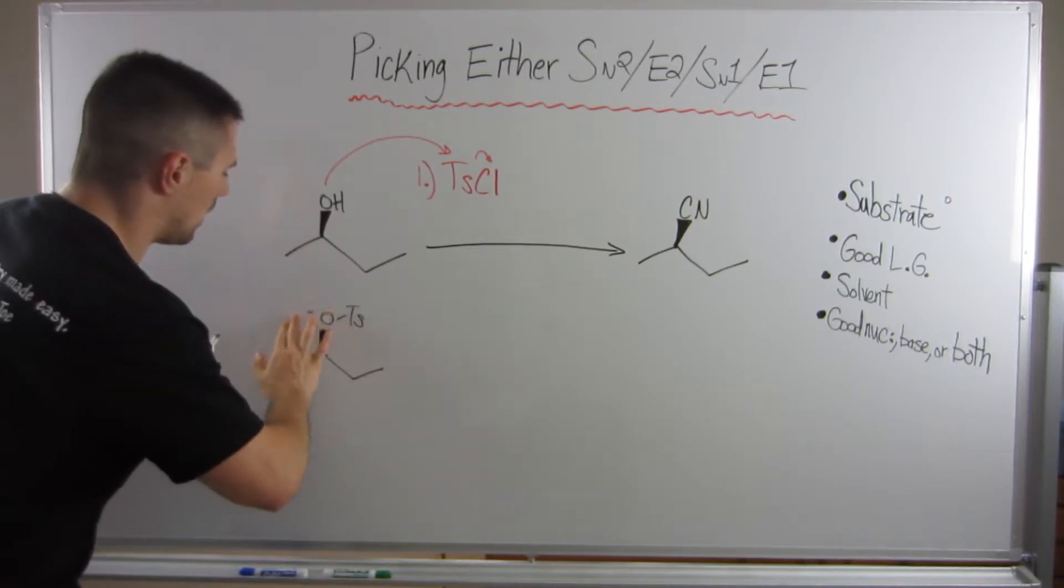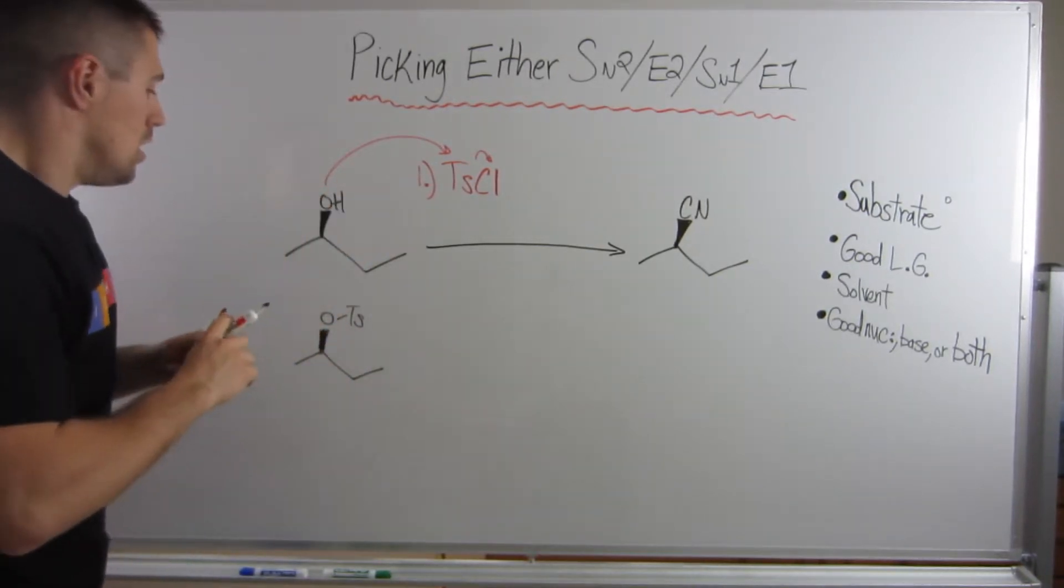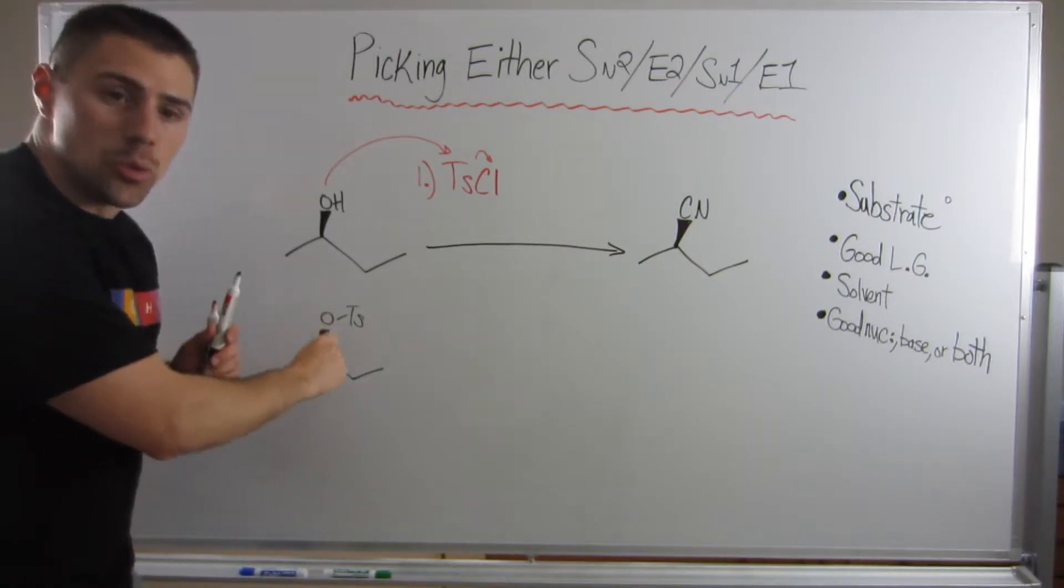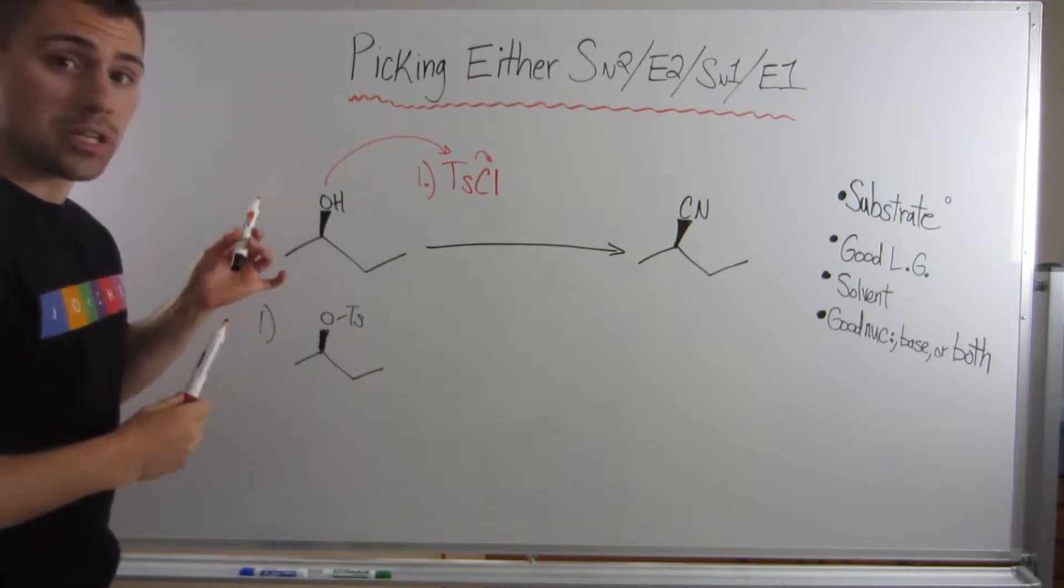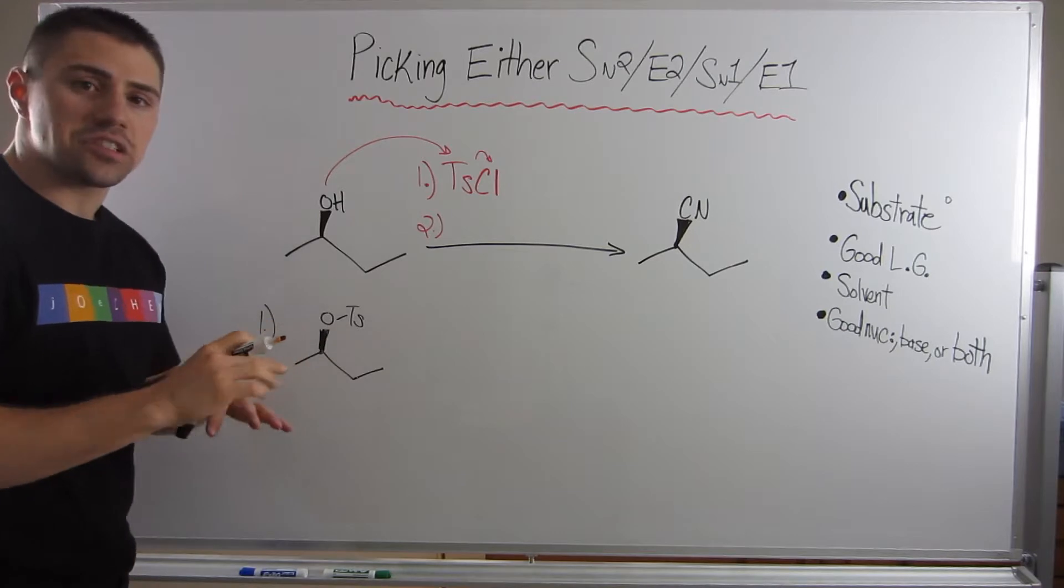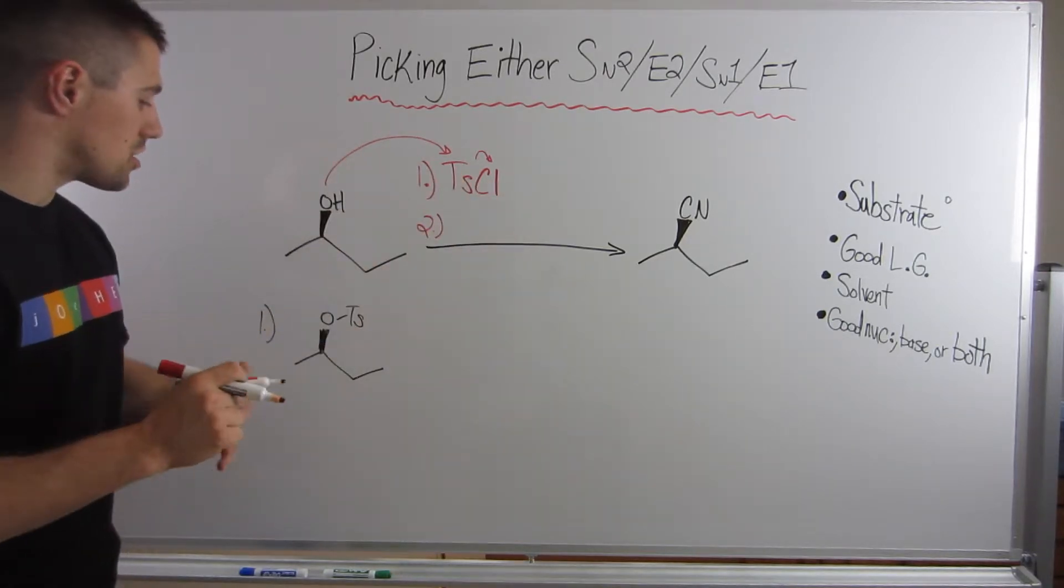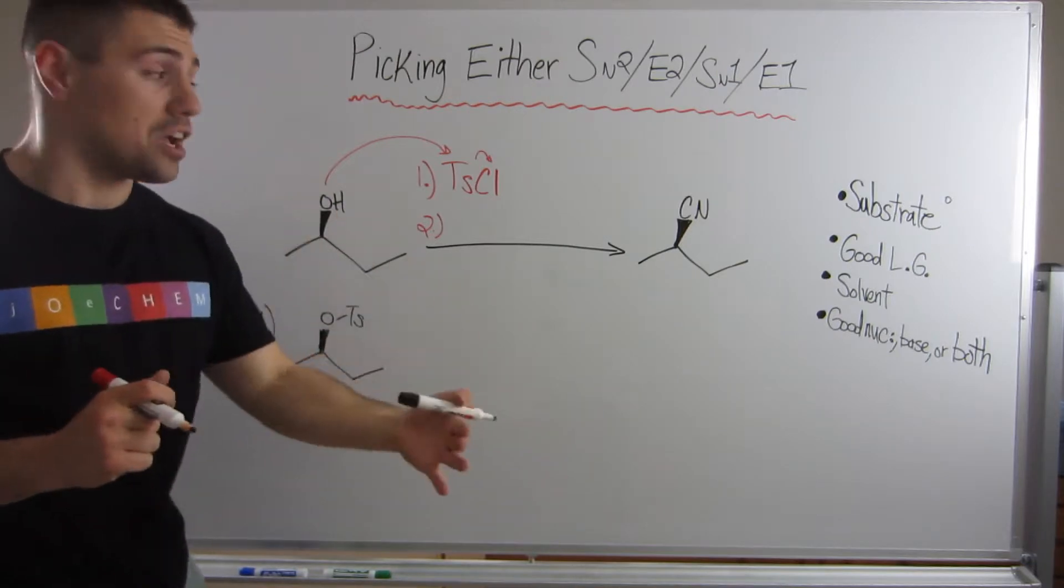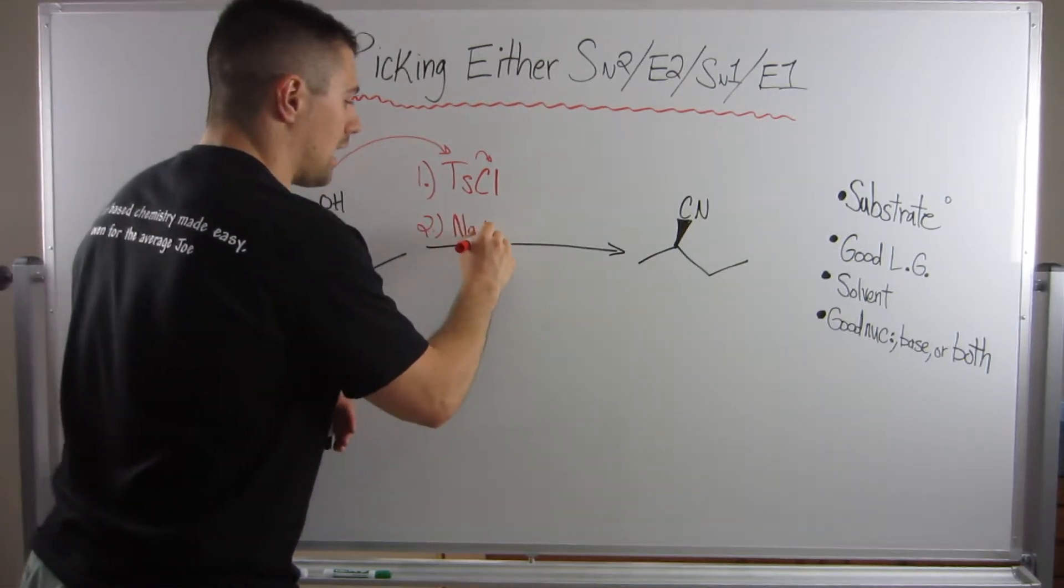And this is a good leaving group. This is something we can do SN2 on, and I'm sorry, this is a wedge. I apologize. Alright, what do we got going on next? That's our first step. So here, now we can do SN2 on this molecule. I'll put a little 1 over here. This is something we can work with.